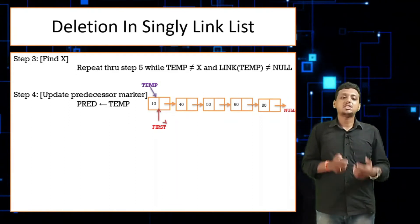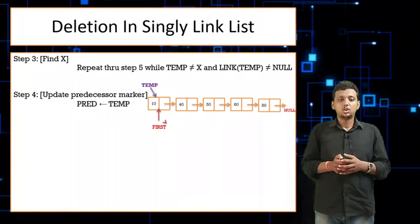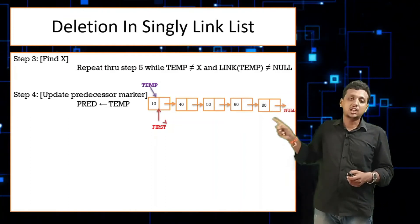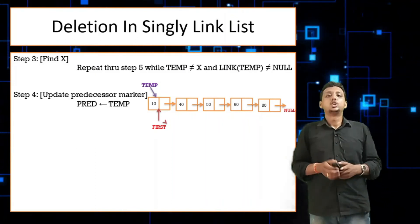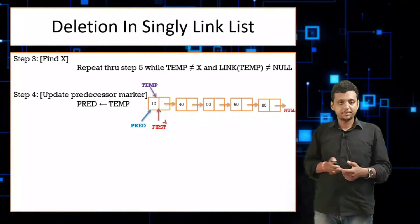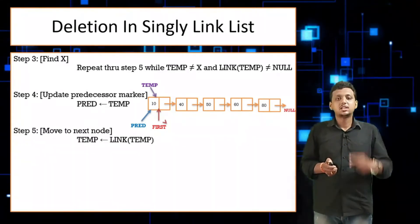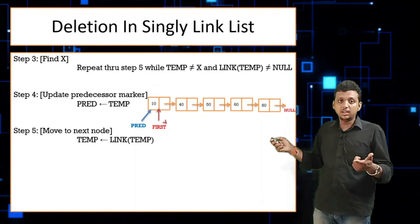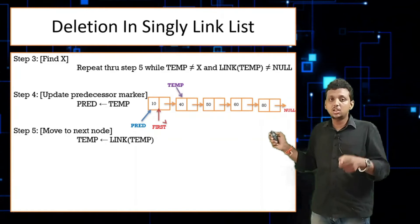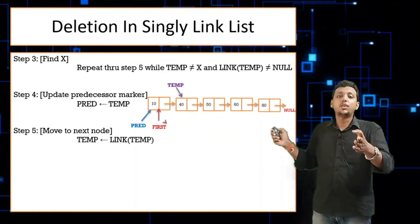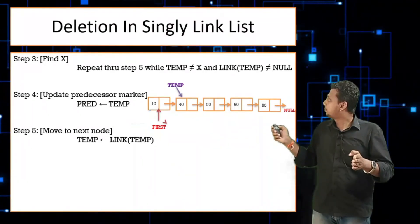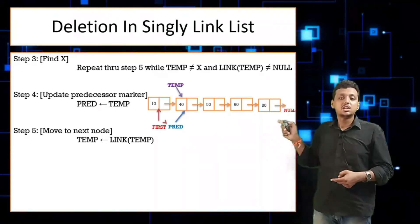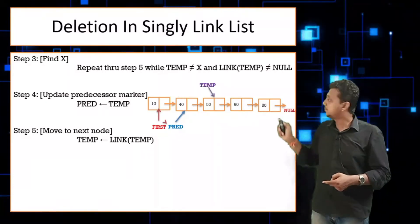Inside the loop, step four is: set predecessor to temp. Step five is: set temp to link of temp, moving temp forward. For example, temp moves from first to 40 — check the condition, temp not equal to x, link of temp not null, so predecessor moves to temp and temp moves to 50. Again check: temp not equal to x, so predecessor moves to 50, temp moves to 60.